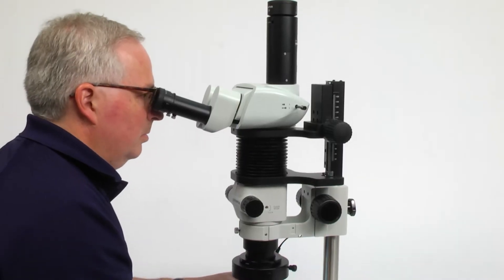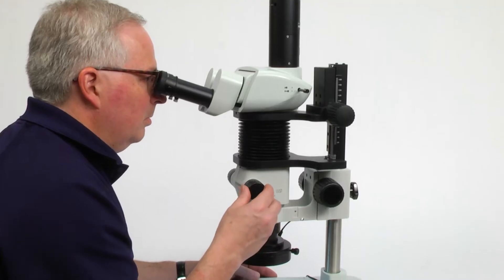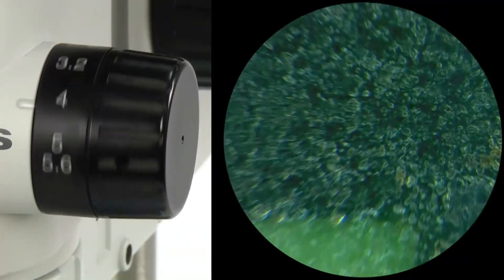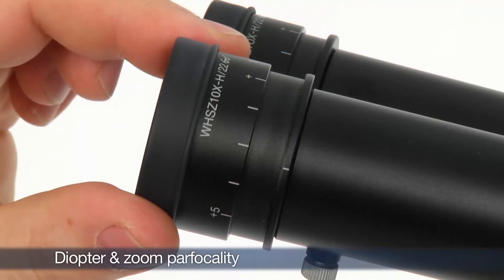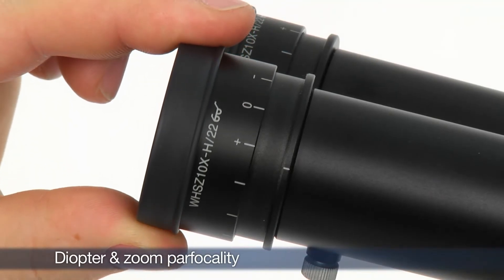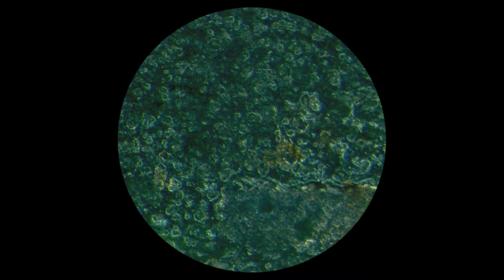Next, the stereo microscope must be properly focused to provide a clear image from low to high magnification. The diopter and zoom parfocality must be properly adjusted to provide consistently clear images through the range of magnifications.